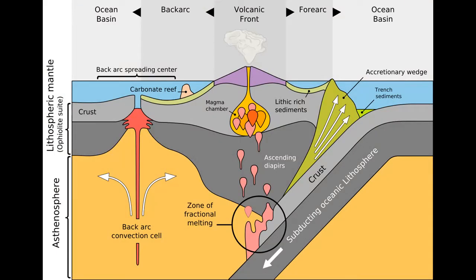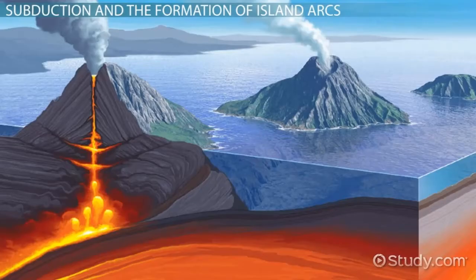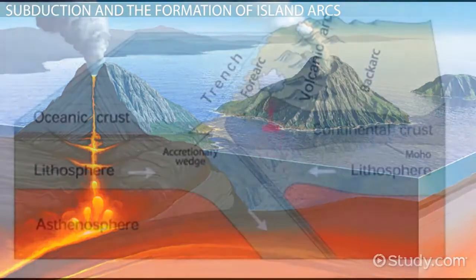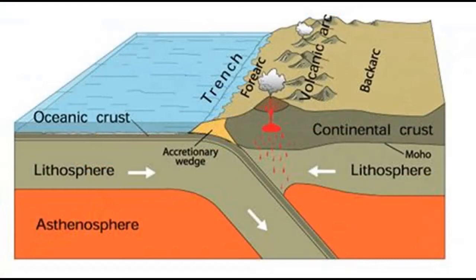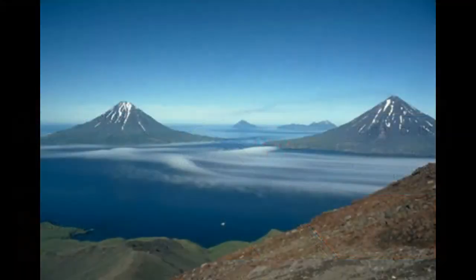Subduction zones can be roughly divided into four regions: 1. A deep ocean trench, which forms where a subducting slab of oceanic lithosphere bends and descends. 2. A volcanic arc, built upon the overlying plate. 3. The forearc region, located between the trench and the volcanic arc. 4. The back arc region, on the side of the volcanic arc opposite the trench.